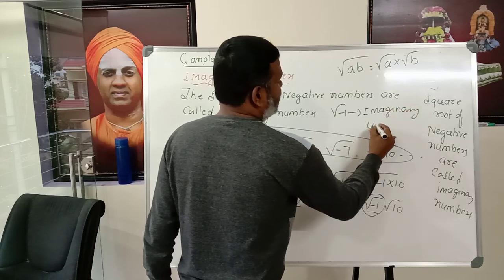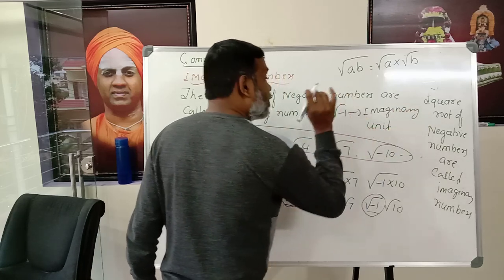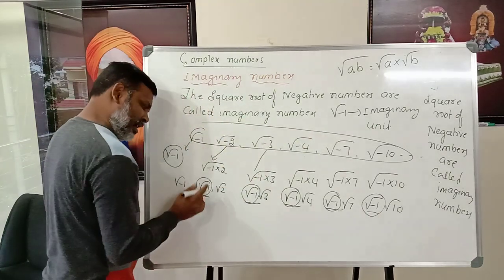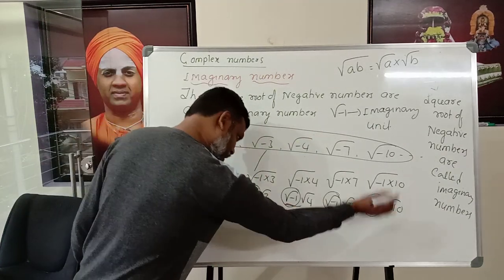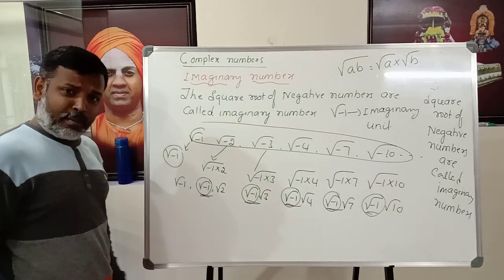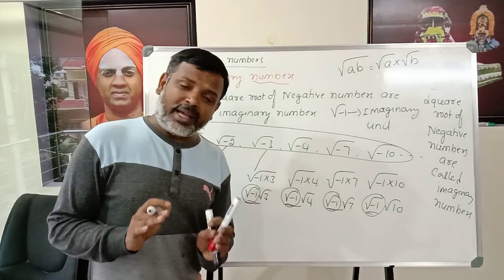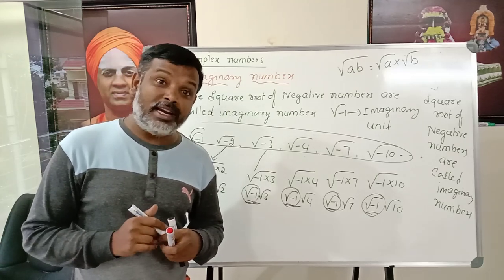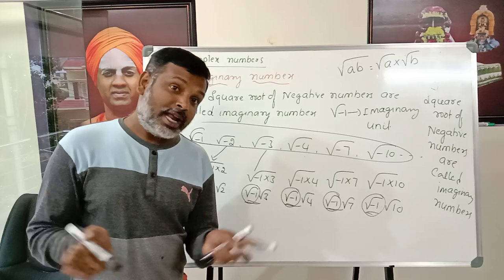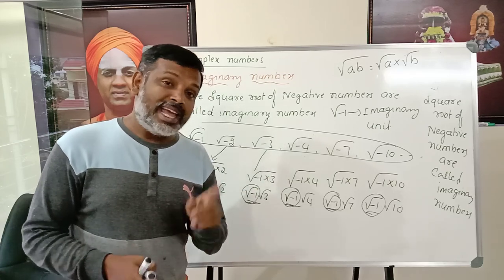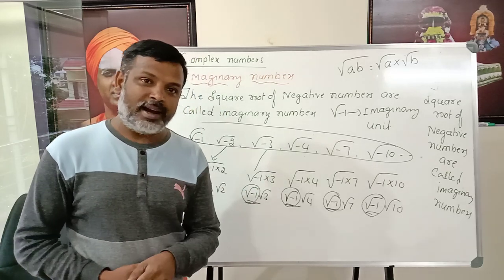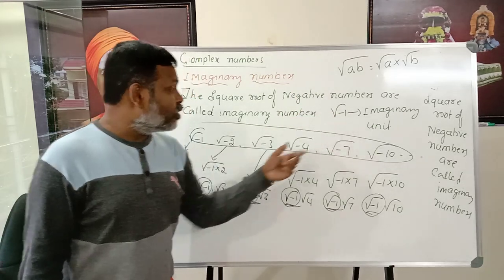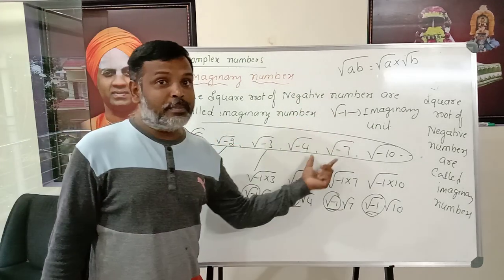Therefore, square root of minus 1 we call the imaginary unit. Every imaginary number can be expressed in terms of √(−1). So √(−1) is the fundamental unit for imaginary numbers.